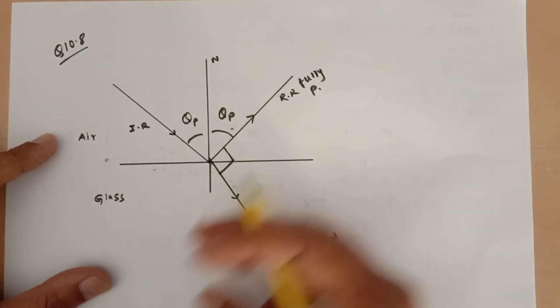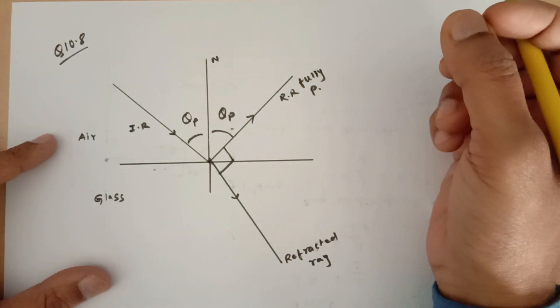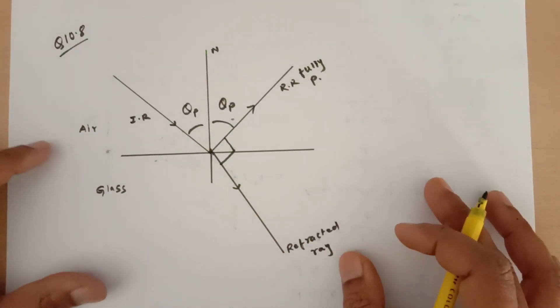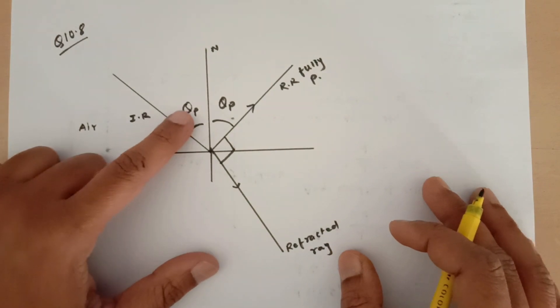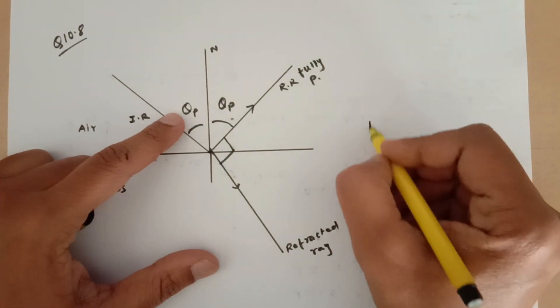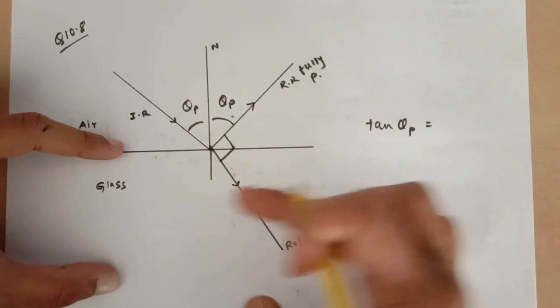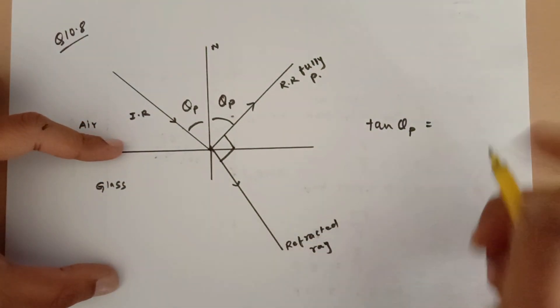This becomes fully polarized. Now you can check with the help of the polaroid meter. You can just turn and you will be able to find out that this is polarized completely. Now we know that tan of theta p is equal to the refractive index of the second medium where we have the refracted ray. So that is the refractive index of glass with respect to air.